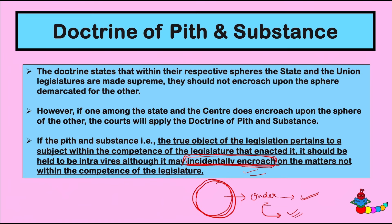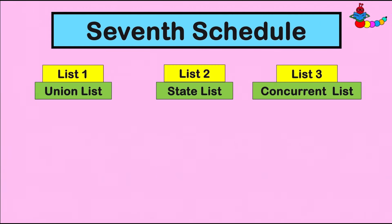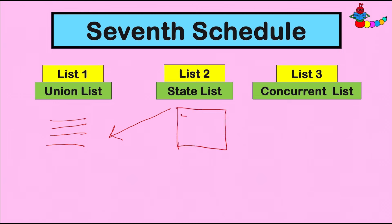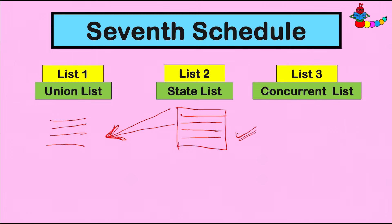अगर मैं अब sum up करूं पूरे doctrine को — तो वो बोलते हैं कि अगर State कभी ऐसा कोई law बना देती है जो Union List के किसी topic से relate कर रहा होता है या उसे touch कर रहा होता है, लेकिन main intention State की जो act बनाने की थी वो ये थी कि वो अपने ही subject matter को cover कर रहे थे — it just incidentally उन्हें उस particular topic को touch करना पड़ा और उन्हें touch किए बिना उनका काम नहीं चल पा रहा था — तो ये act State द्वारा ultra vires नहीं मानी जाएगी, इसकी validity रहेगी।